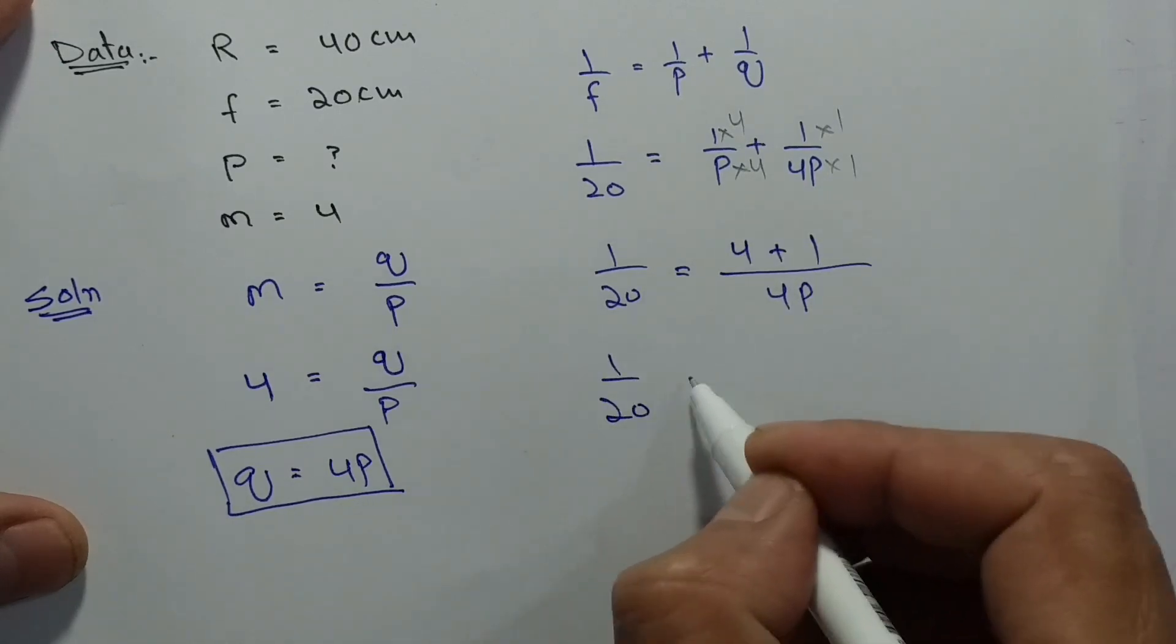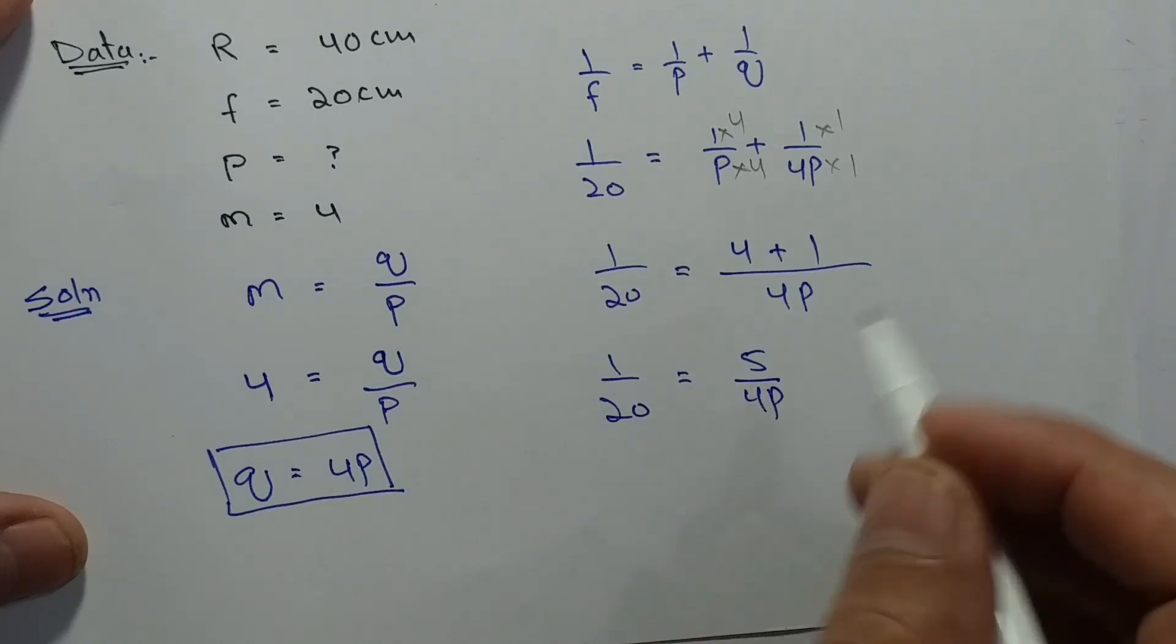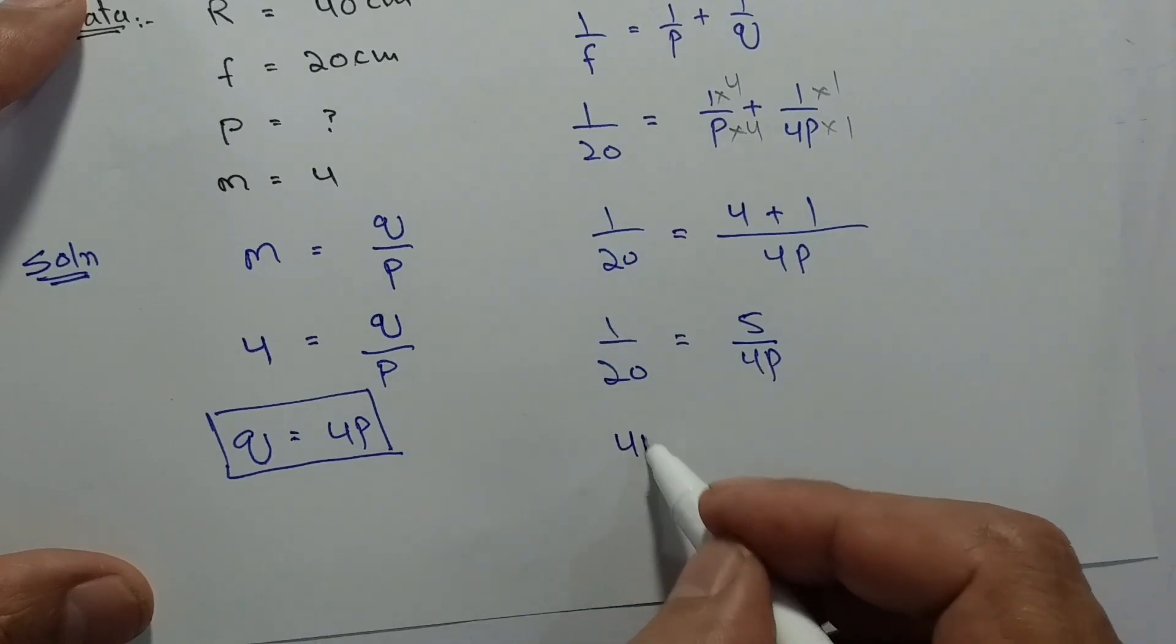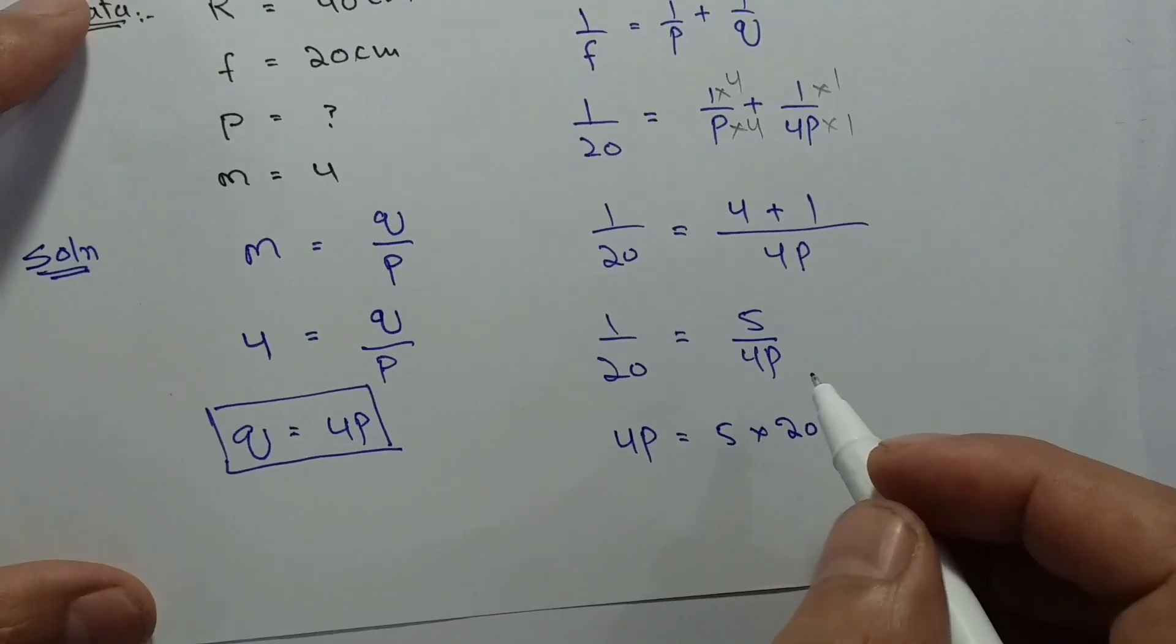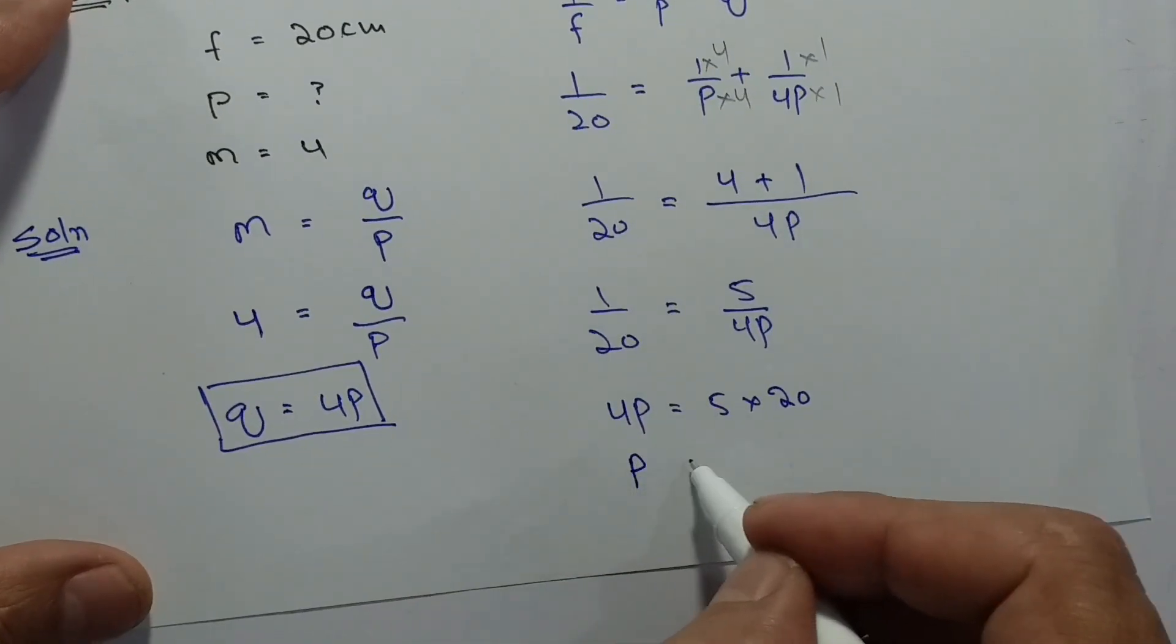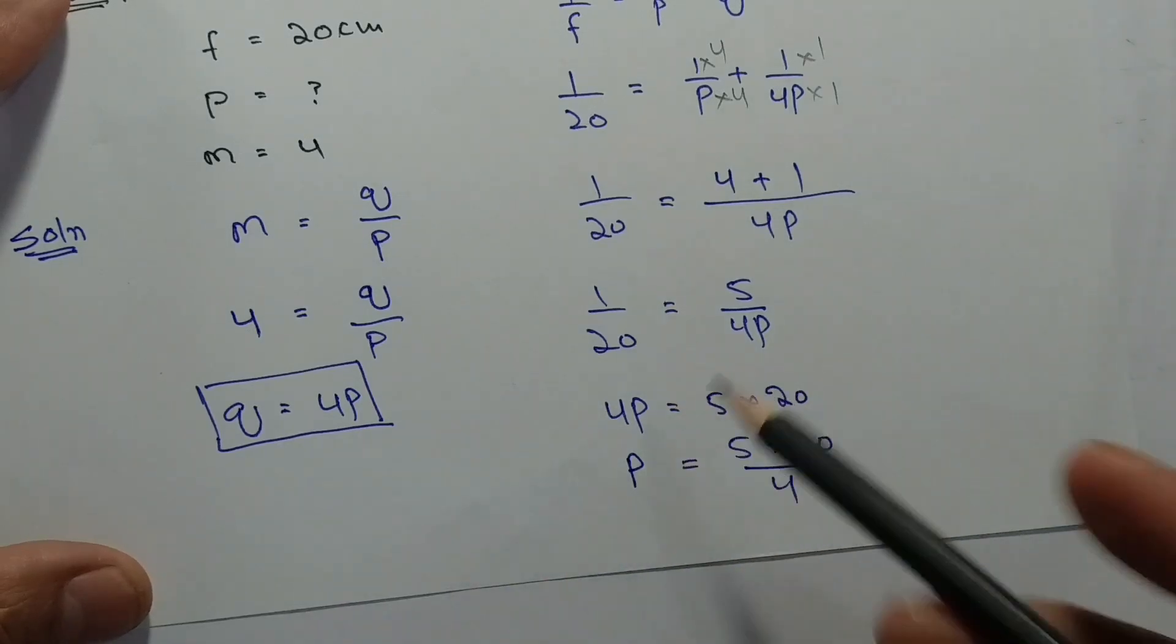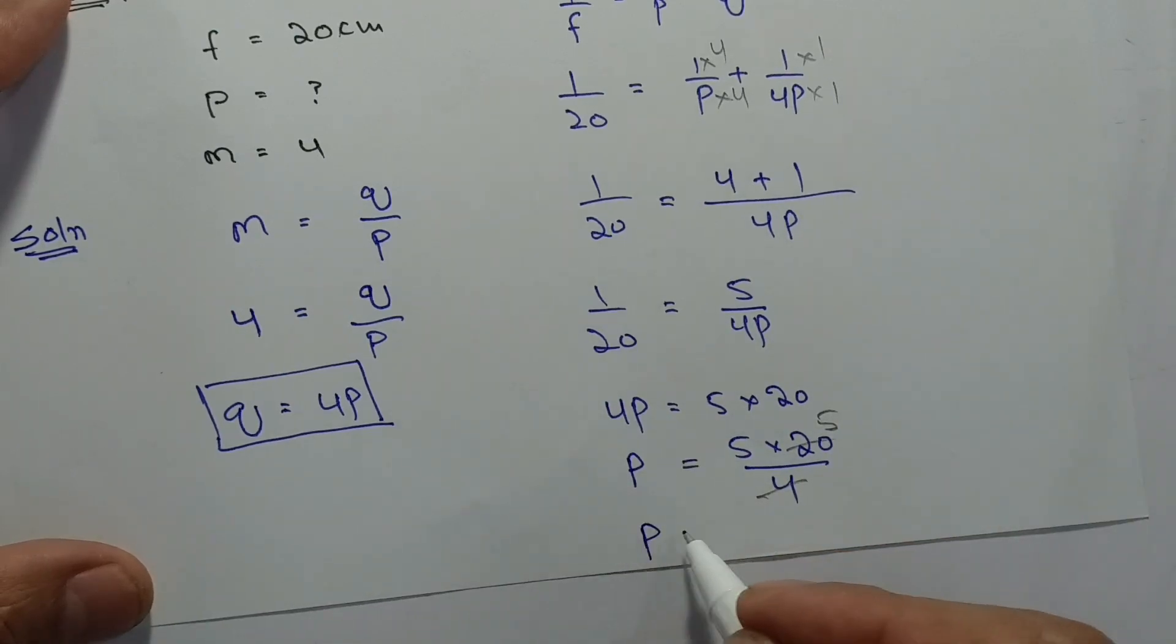One upon 20 equals 5 upon 4p. By cross multiplication, 4p equals 5 multiplied by 20. Therefore p equals 5 times 20 divided by 4, which gives p equals 5 times 5, so p equals 25 centimeters.